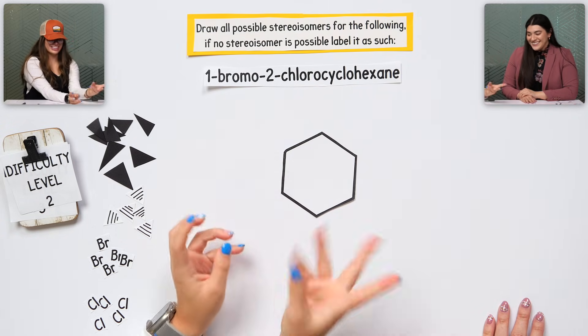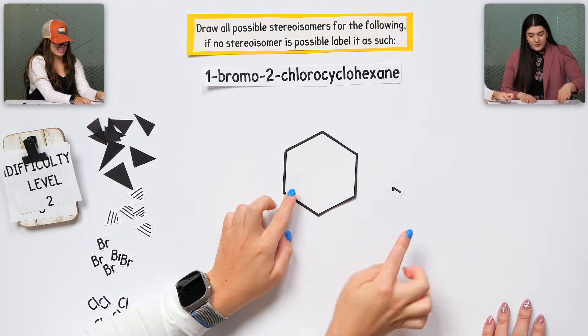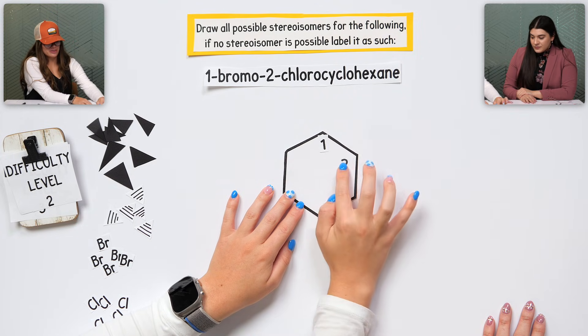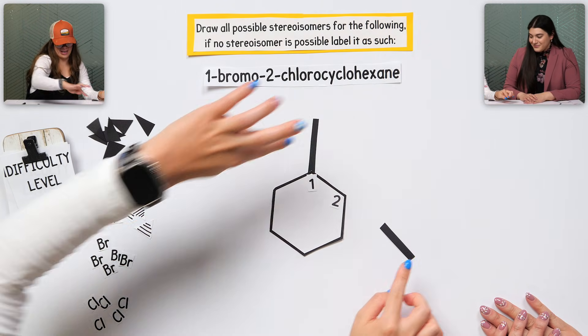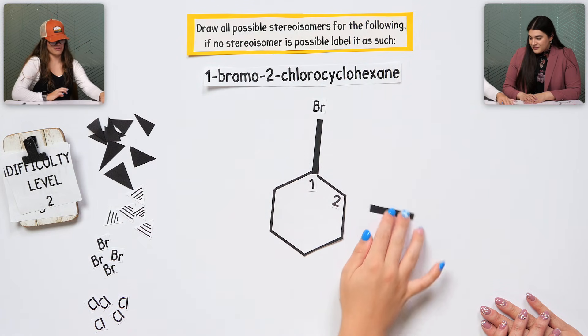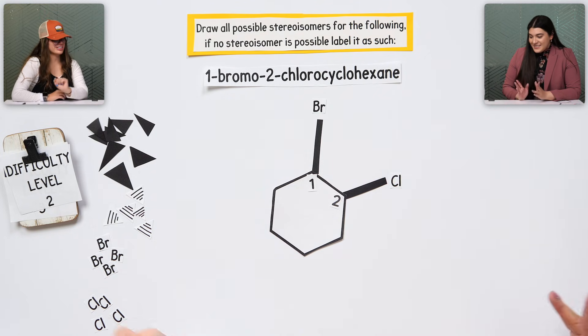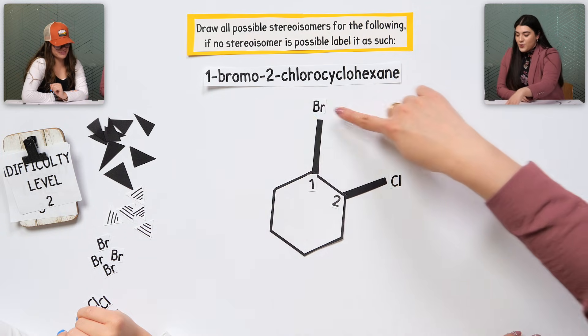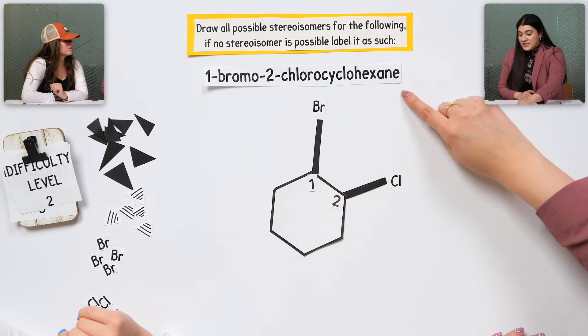So I will have my, it's a six, and it's a cyclo, so it's like a ring. And then I have, I will label it one and two. But on the one, there's a bromo. And then on the two, there's a chloro. I know that one, bromo means bromine. Two, chloro means chlorine. That's exactly correct.